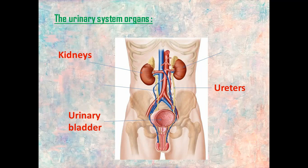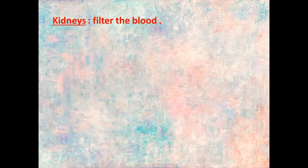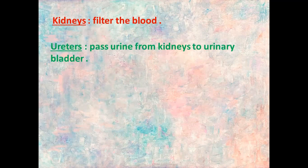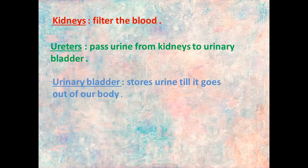So the functions of these organs: the two kidneys filter the blood. The two ureters pass the urine from the two kidneys to the urinary bladder. And the urinary bladder stores this urine until it goes out of our body in the excretion process. The kidneys are the most important organs in the urinary system.